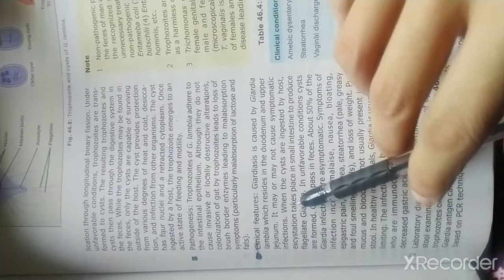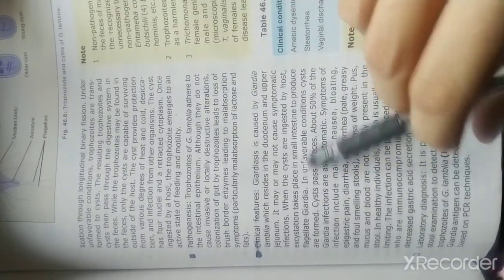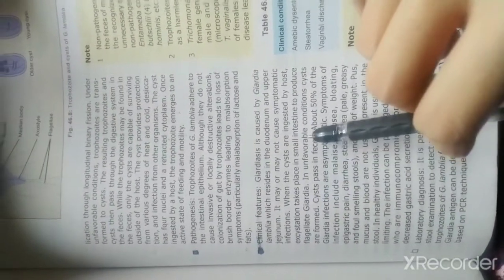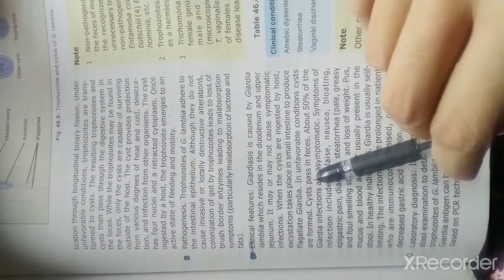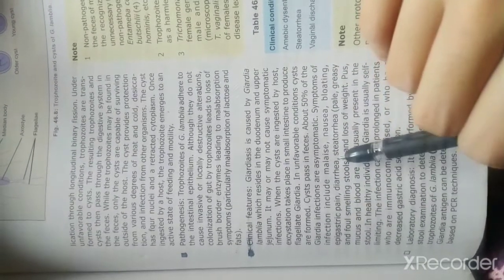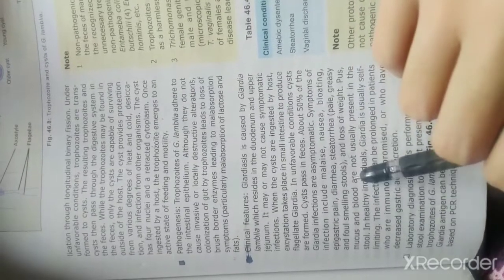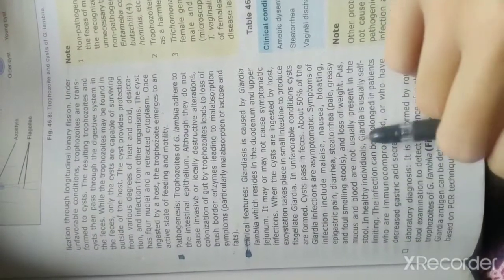It may or may not cause symptomatic infection. Most Giardia infections are asymptomatic. Symptoms of infection include malaise, nausea, bloating, epigastric pain, diarrhea, steatorrhea, and loss of weight. Pus, mucus, and blood are not usually present in the stool. In healthy individuals, Giardia is usually self-limiting. The infection can be prolonged in patients who are immunocompromised or who have decreased gastric acid secretion.